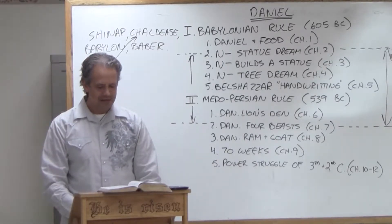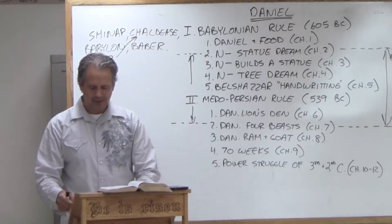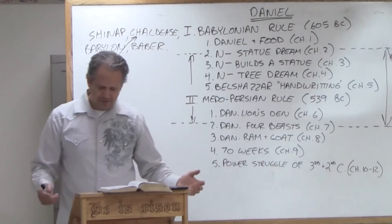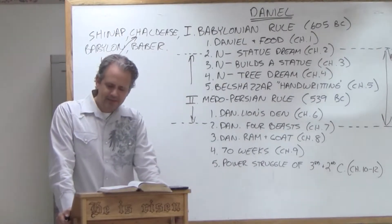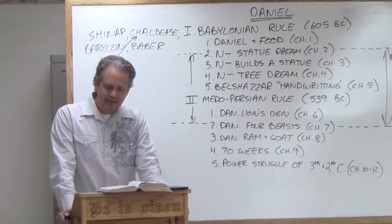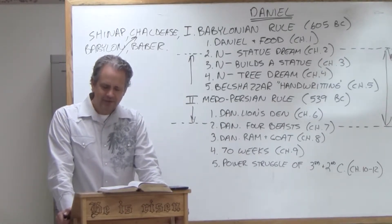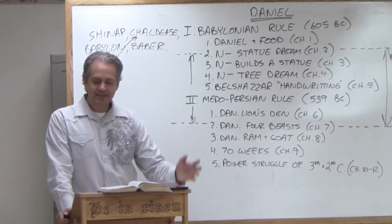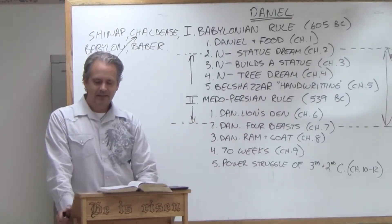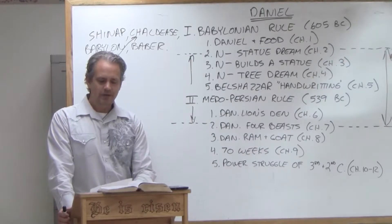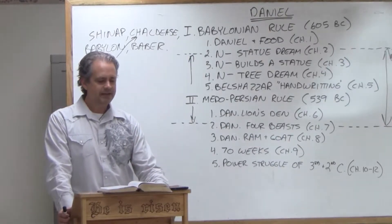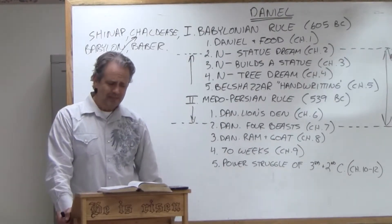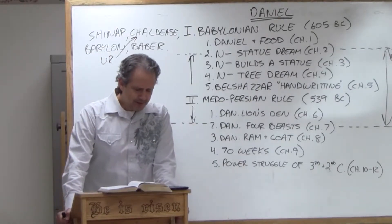Nebuchadnezzar, actually, you would think that this could turn out really bad. But in the end, chapter 3 verse 28, Nebuchadnezzar answered, Blessed be the God of Shadrach, Meshach, and Abednego, who has sent his angel, delivered his servants, trusted in him. They set aside the king's command, and they yielded up their bodies rather than serve and worship any god except for their own. So these three guys get promoted in Babylon.